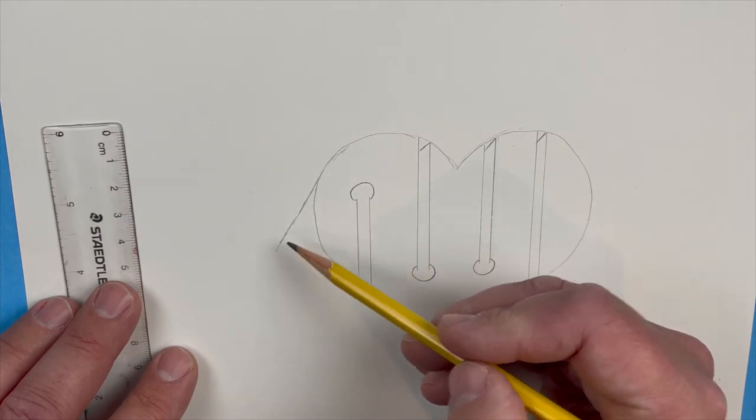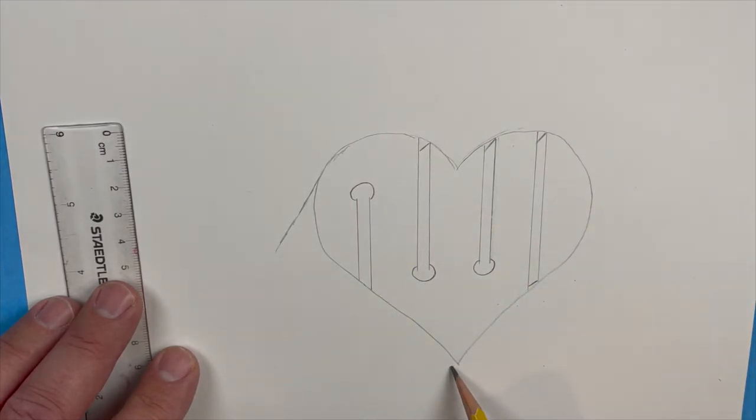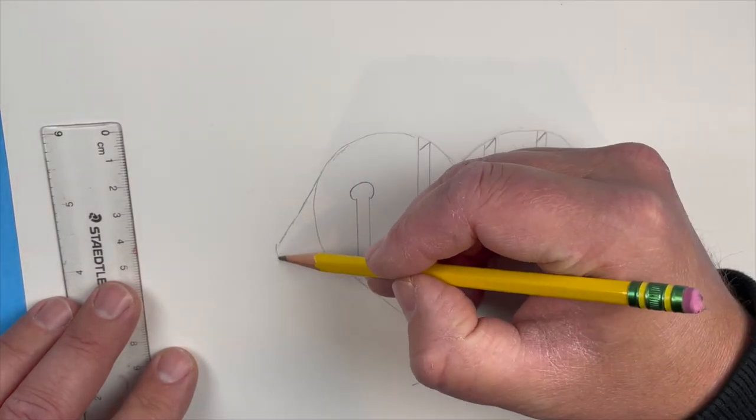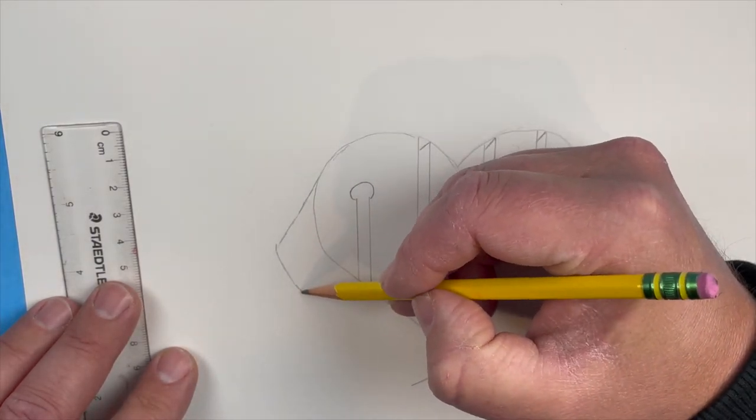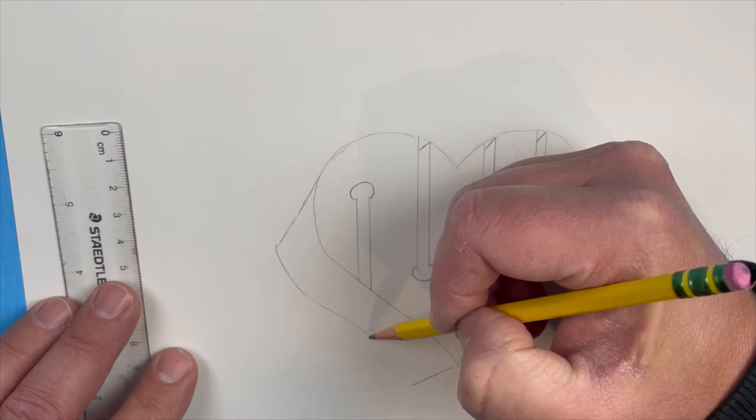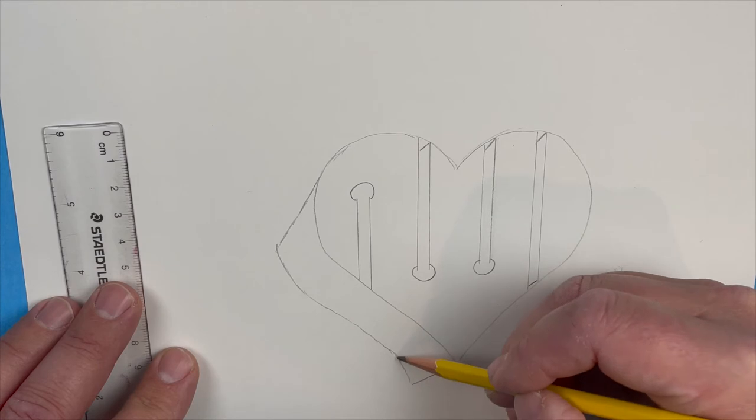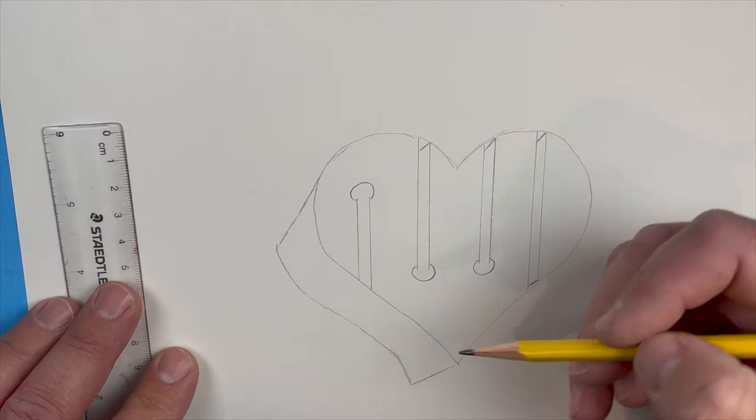Next thing we're going to do is on the left side we're going to come out because we want this heart to look 3D, like it's puffy, like it's coming off the paper. So you're basically going to create another line about the same thickness from the top to the bottom like so.